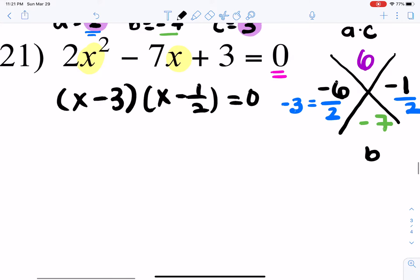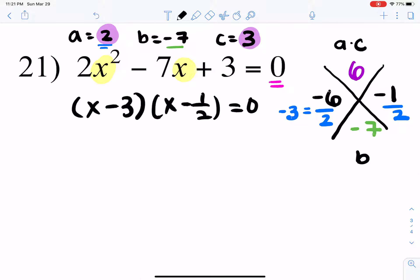Now, if you want to rewrite the second set because the denominator is 2, you can rearrange it and write x minus 3 times 2x minus 1 equals 0.